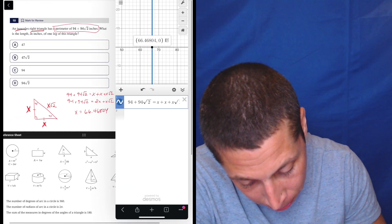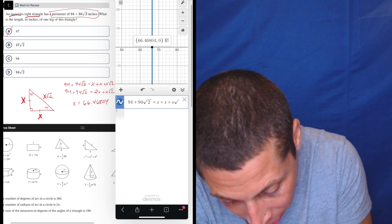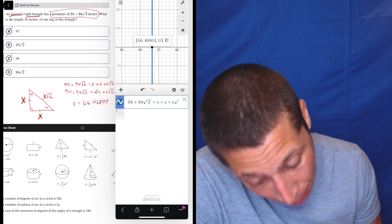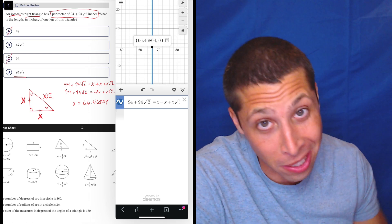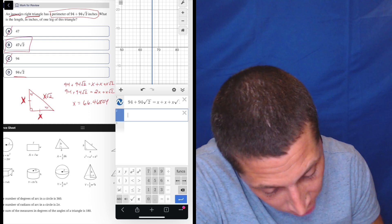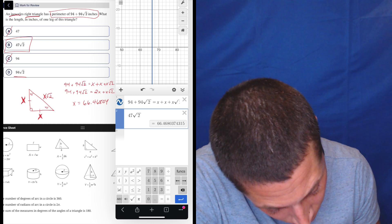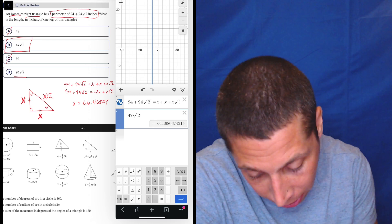Now, I don't know what that is, but it's got to be one of these. So now it's just a matter of testing them, right? So I know it's not 47. I know it's not 94. I bet it's not 94 root 2 because that would be bigger than 94. So it's probably 47 root 2, but let's double check. Let's just put it in 47 square root 2, 66.4, whatever, right? That's it. Done.